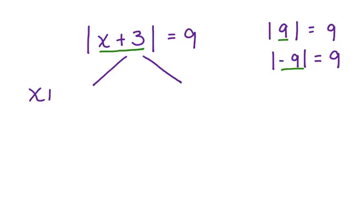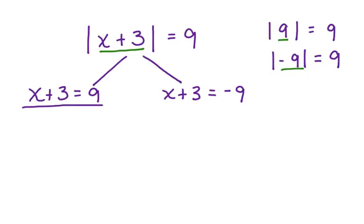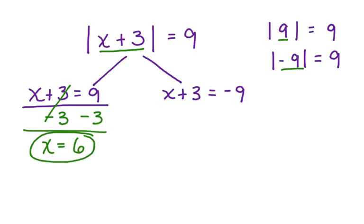x plus 3 is equal to 9, and x plus 3 is equal to negative 9. Now we're going to solve both of these equations. Let's start with this one first. We're going to subtract 3 from both sides. These cancel, and x is equal to 6.